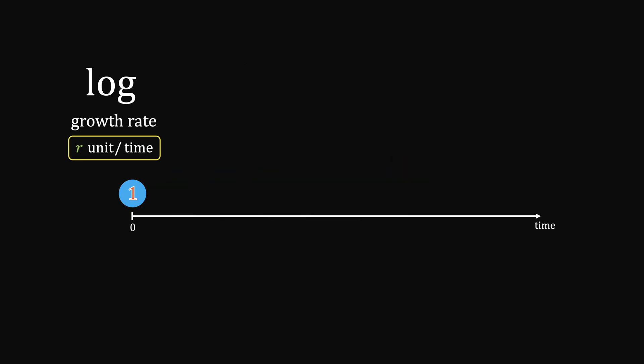Log operation is very intuitive. If one unit becomes two units per unit time, then the growth rate would be two minus one divided over the starting unit.